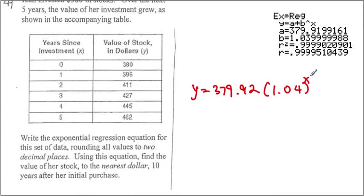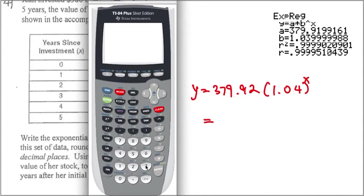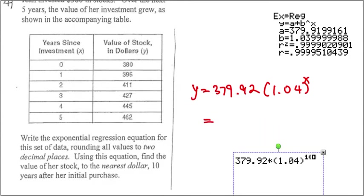Now, what if x equals 10? Then the question is asking for the question here. So then, to calculate that, we're gonna use the calculator once again. 379.92 times 1.04 raised by 10. Then, this will be the value that we end up getting. They want us to put it to the nearest dollars. So then, our answer would have been 562 dollars.